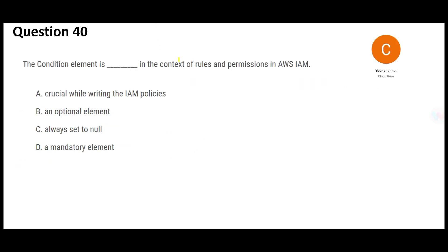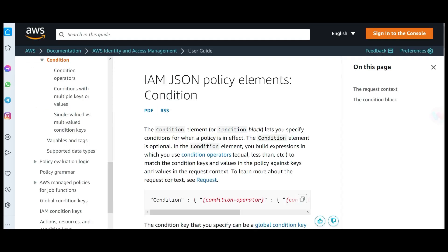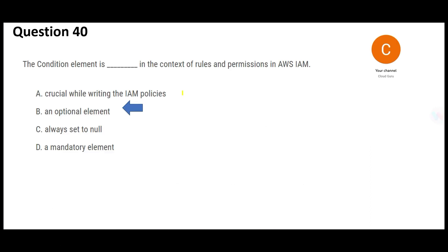The next question asks about the condition element in the context of rules and permissions in AWS IAM. Looking at the documentation, you can clearly see that the condition element is optional — it is not a mandatory element. This makes option B the right answer.